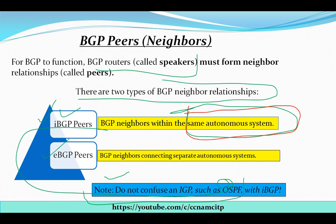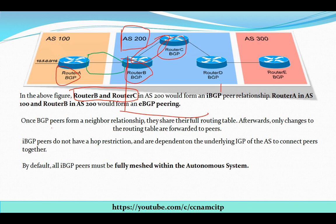I hope that makes the difference between IBGP and EBGP peering clear. Once BGP peers form a neighbor relationship, they share a full routing table. Afterward, only changes to the routing table are forwarded — so if there is any change in routing information, only that change is forwarded to the neighbor router, not the entire routing table again.